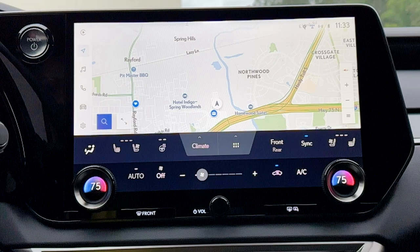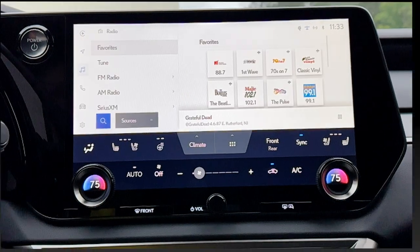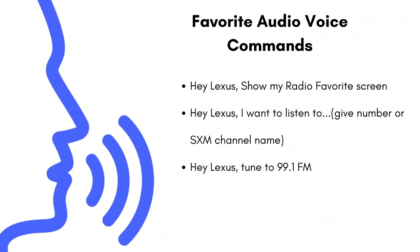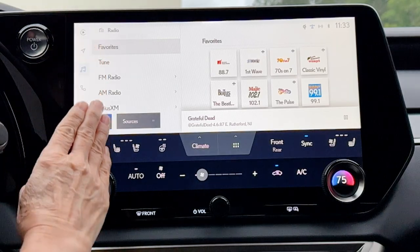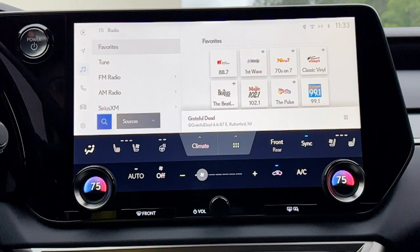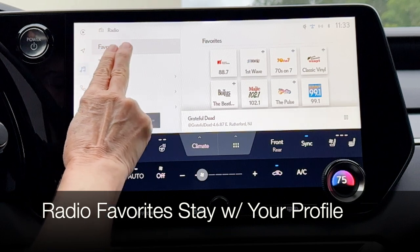Now let's take a look at our Lexus audio system — just click on the music notes in the Lexus interface menu. My top audio voice command tips are to ask Lexus to show my radio favorite screen or to tell Lexus what I'd like to listen to. For example: 'Hey Lexus, I want to listen to First Wave on Sirius XM,' or 'Hey Lexus, tune to channel 33,' or 'tune to 99.1 FM.' Let's take a look at the menu items on the left-hand side — our first item is our favorites.